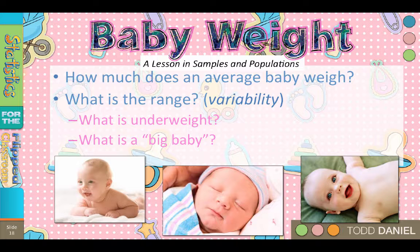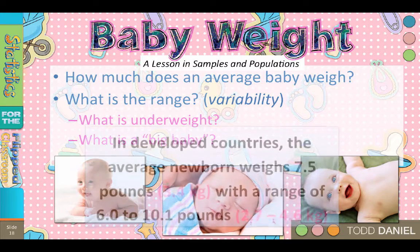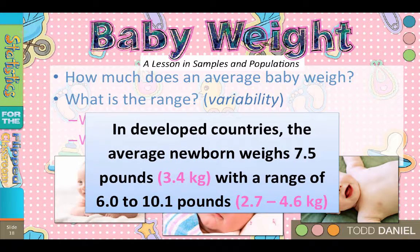So now you have an average and a measure of variability — you have an idea about what is normal. Just for reference, in developed countries the average weight of a newborn is 7.5 pounds, with a range of 6.0 to 10.1 pounds.